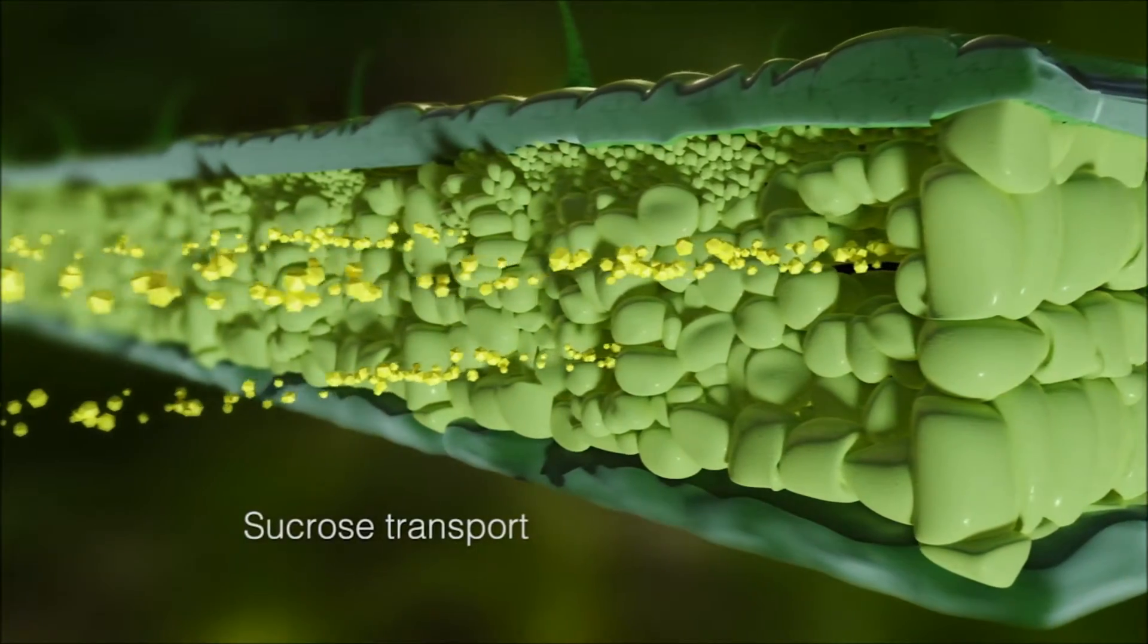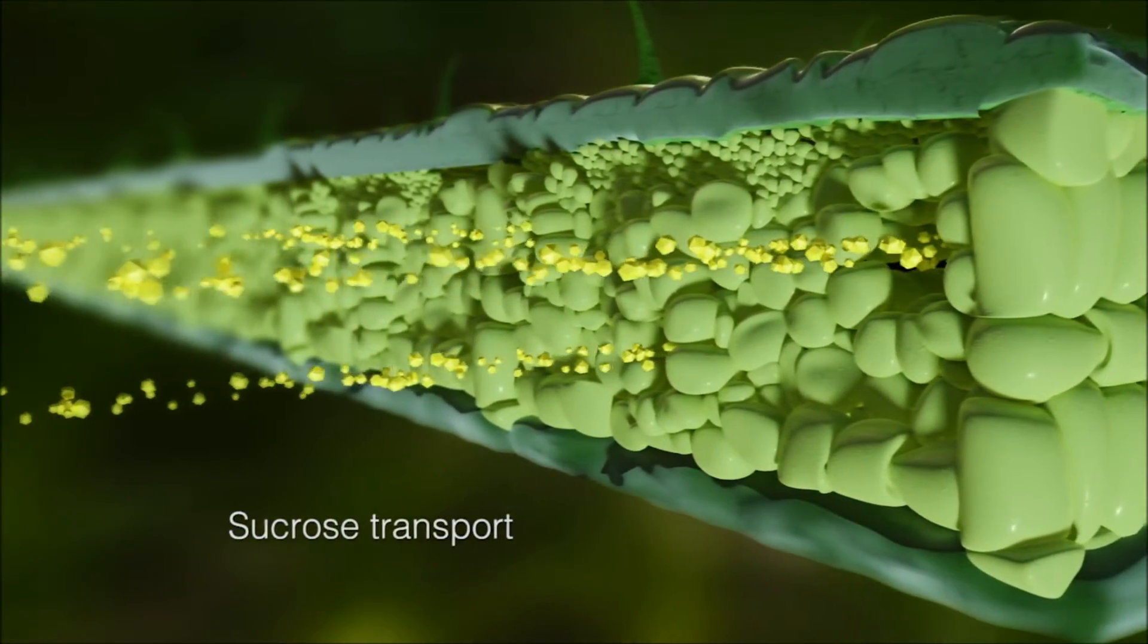And transport of sucrose away from the leaf, via the phloem system, to areas of active growth, including the developing ear of grains.